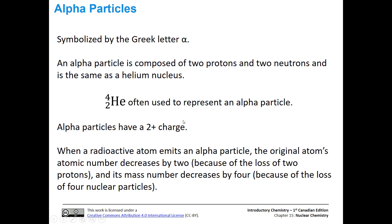Let's talk about alpha particles first. These are symbolized by the Greek letter alpha. An alpha particle is composed of two protons and two neutrons, and that is the same as a helium nucleus. We usually represent it with 4 as the mass number, 2 as the atomic number, and then the elemental symbol for helium. Alpha particles have a two-plus charge — this is only a helium nucleus; it does not have its associated electrons.